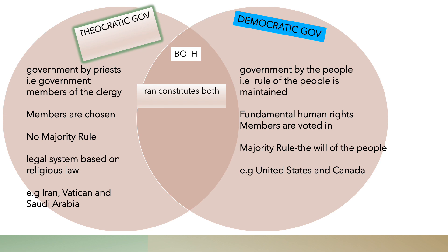There are a few examples of countries that still practise this form of government: Iran, the Vatican (or Vatican/Italy), and Saudi Arabia. On the right-hand side we have the democratic government. A democratic government is a government by the people — the rule of the people is maintained. It's all about fundamental human rights being preserved, members are voted in, and of course there is majority rule. Two examples: the United States and Canada.